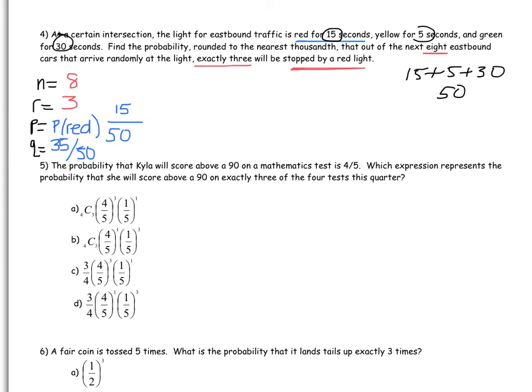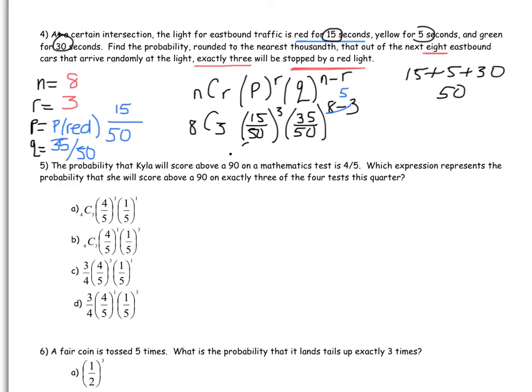So now we have the N, C, R, P to the R, Q to the N minus R. So N is 8, C, 3 is R, P is 15 out of 50, R is 3, Q is 35 out of 50, N is 8, R is 3. Again, we're not going to put the N, 8 minus 3 in there. We're going to put it in as 5 because that's when we subtract it. So go ahead, put this into the calculator, see what you get. You should get 0.254.